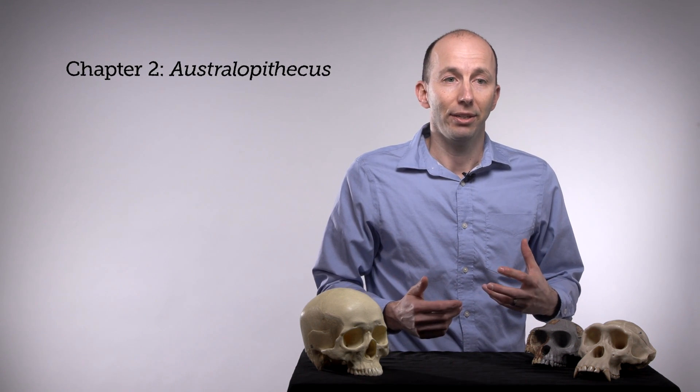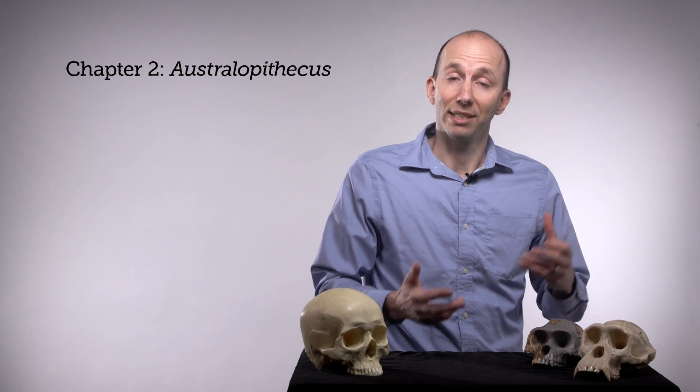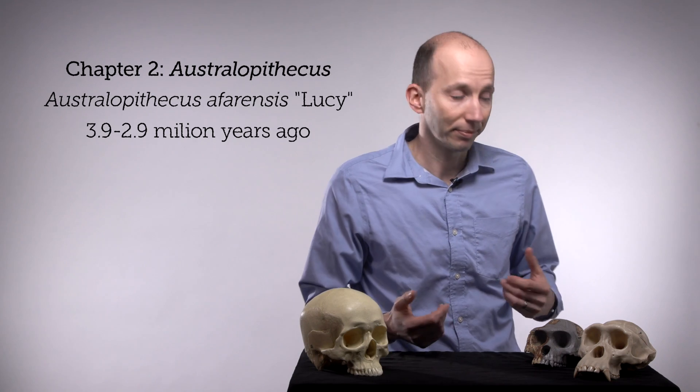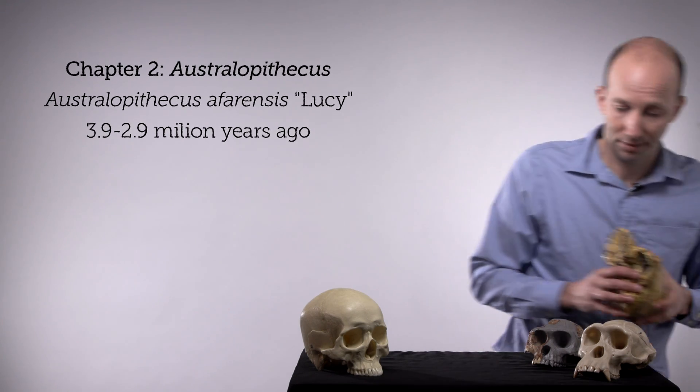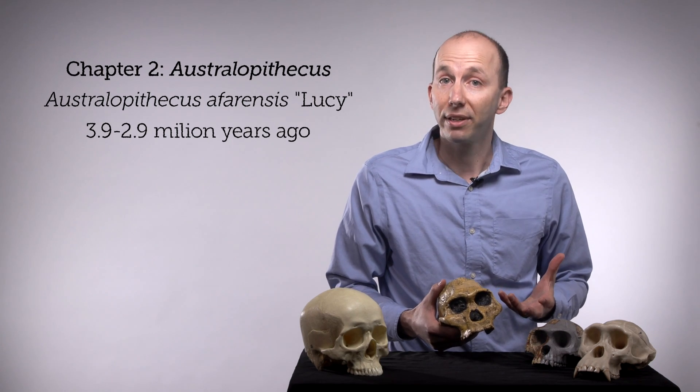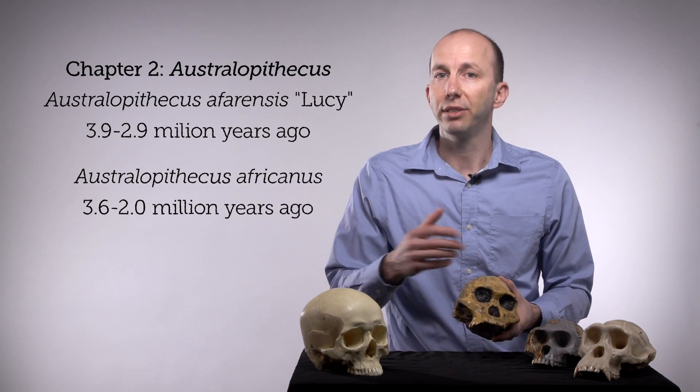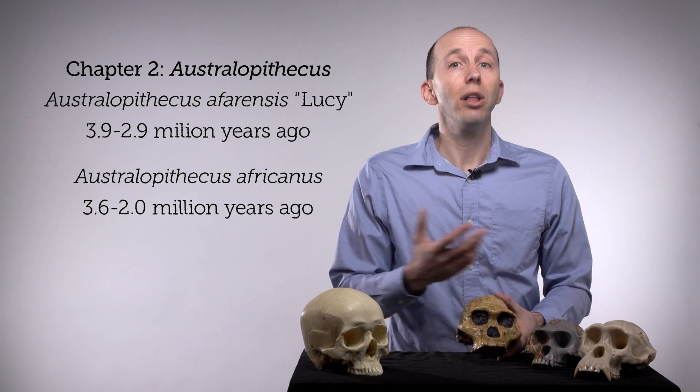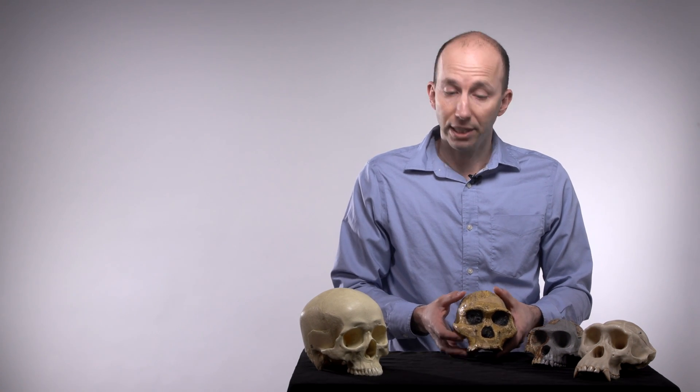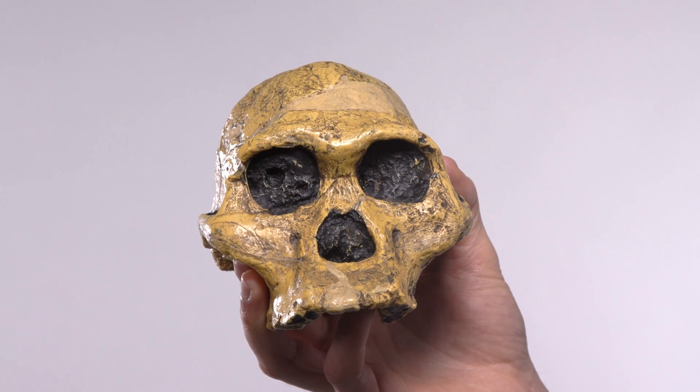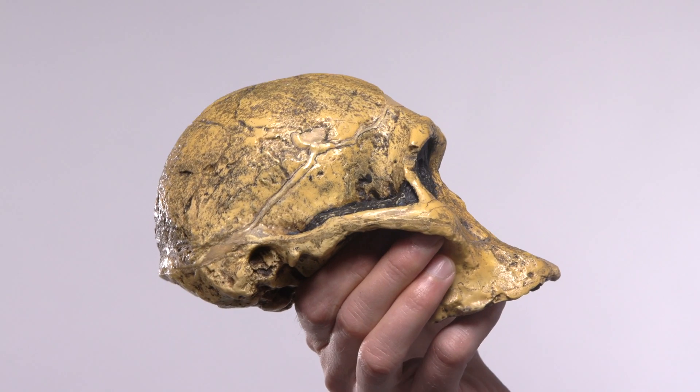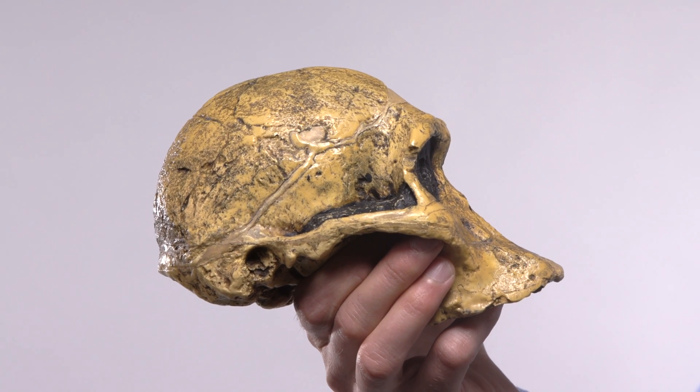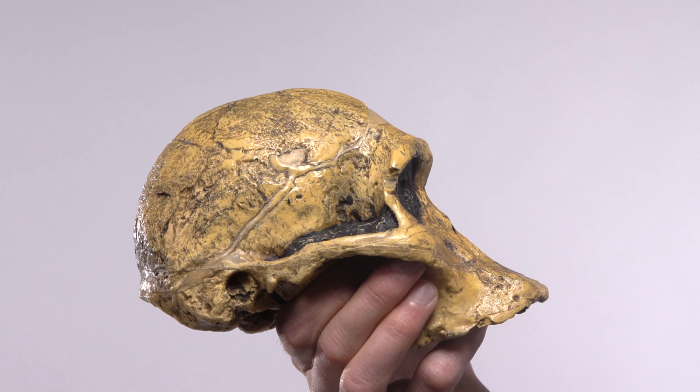That's chapter one, the earliest hominins. Chapter two is dominated by this genus called Australopithecus. And the most famous member of Australopithecus is Australopithecus afarensis, which is what the famous Lucy skeleton is a member of. So here's a skull of Australopithecus africanus, not Lucy's species, but a sister species. Like chapter one, all of chapter two takes place in Africa. And so you can see with Australopithecus here, we still have a relatively ape-like head. The face still projects forward. The brain size is a little bigger, but not much. So in terms of intelligence, cognitive abilities, probably similar to apes living today.